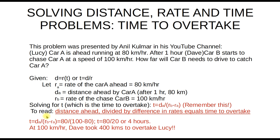So we know that at 100 kilometers per hour, Dave took 400 kilometers to overtake Lucy, and that is the answer to the problem. If you have any questions or comments, you might want to leave a comment below and tell me what you think.